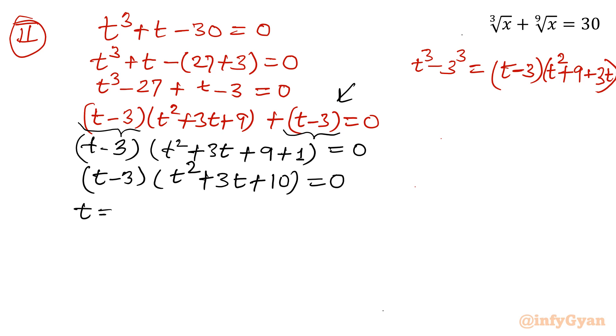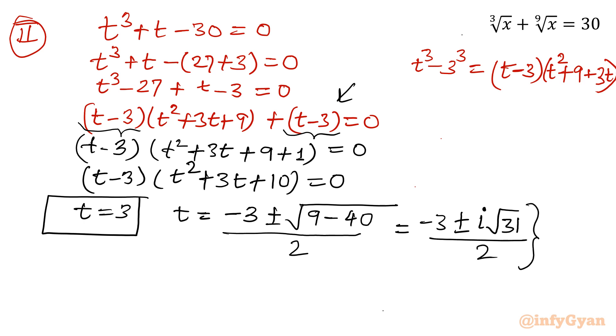Now t will be equal to 3 and from the quadratic equation, if you will solve, t will be equal to minus b, so minus 3 plus minus square root b square 9 minus 4ac minus 40 over 2a. So minus 3 plus minus, 40 minus 9, that would be negative 31. Negative means i square, so i will come out. Now important point is this is complex solution and we are looking for real solutions only. So this value of t will be rejected. Which value is accepted right now? That is t equal to 3.